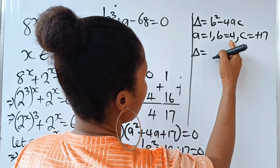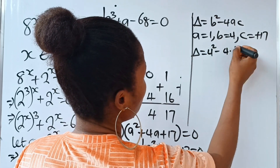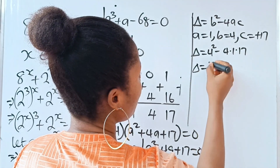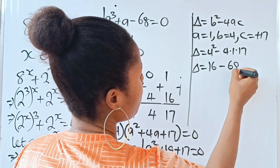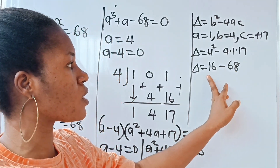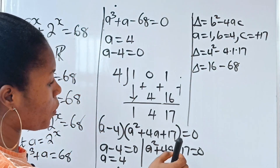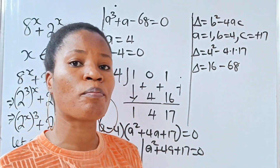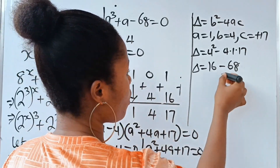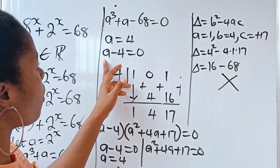The discriminant equals 16 minus 4 times 17, which gives 16 minus 68, a number less than 0. That means solving the quadratic will give complex roots, and since x must be real, we don't need that solution. So we are not going to go further with that quadratic and will instead use the result a equals 4.